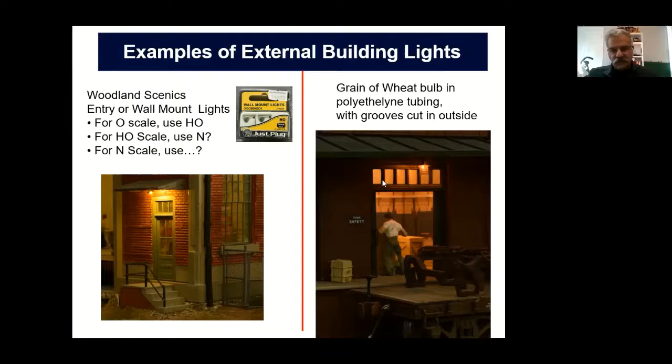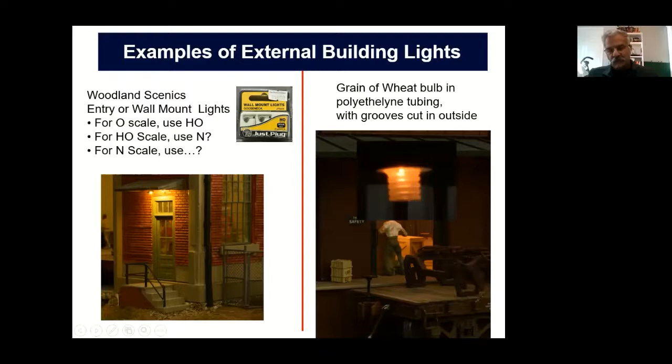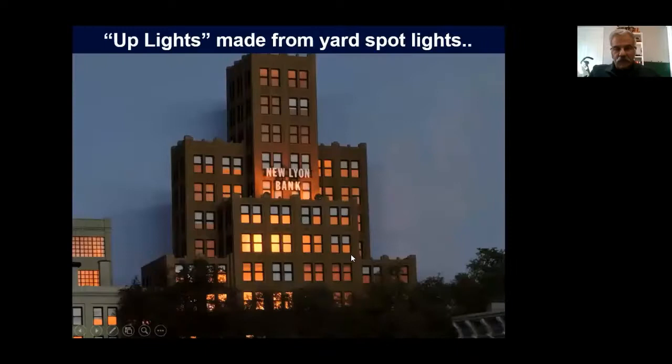Here's a close-up of that. I took a piece of polyethylene tubing, held it in my lathe — but you could do it with a drill press or drill — and just cut grooves in it. It gives that jelly jar look that a lot of outside lights used to have.